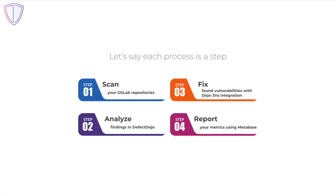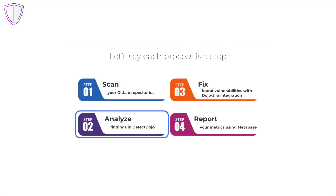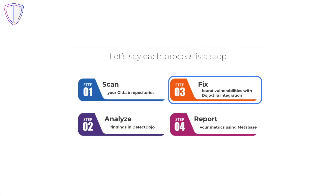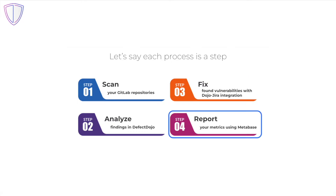Processes are as follows. First one is security scanning — scan your app's repository in GitLab. Second one is vulnerability management system operations — analyze found potential vulnerabilities in a defect management system, Defect Dojo in this case. Third step is security and product team cooperation — export confirmed vulnerabilities to Jira and share them with the project team. The last step is reporting metrics — use Metabase to view the current risk level of your applications.